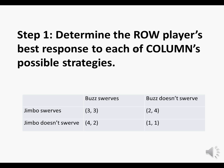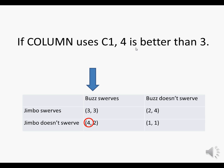Let's look at Column 1 first. If Buzz swerves, the Row player Jimbo's possible payoffs are 3 or 4. The better payoff would be 4. Now, let's look at what happens if Column uses strategy C2, meaning Buzz doesn't swerve. The possible payoffs to Jimbo are 2 or 1. The better one is 2.